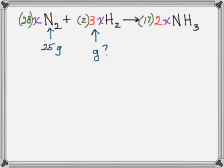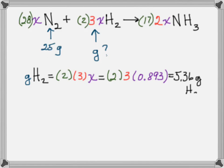What if you wanted to know the grams of hydrogen that you need instead? Do it the same way. The grams of hydrogen would be 2 times 3 times X. Put in our magic number, 5.36 grams of hydrogen.